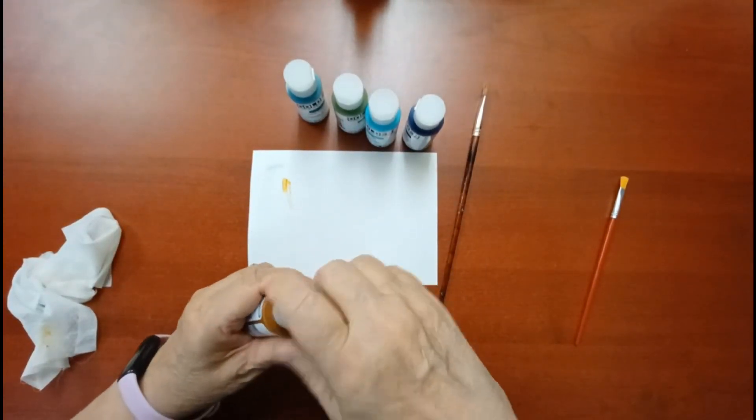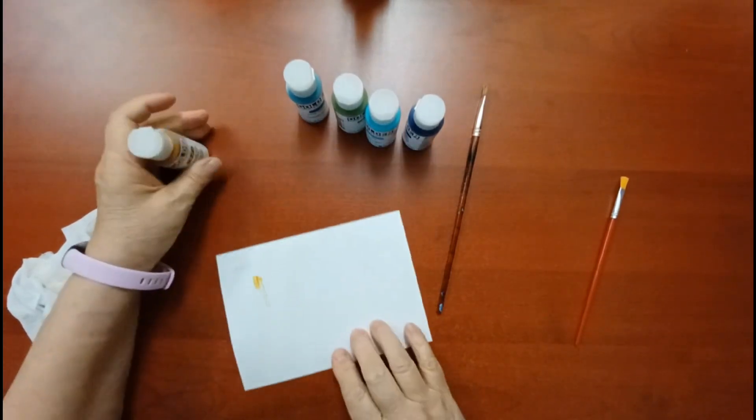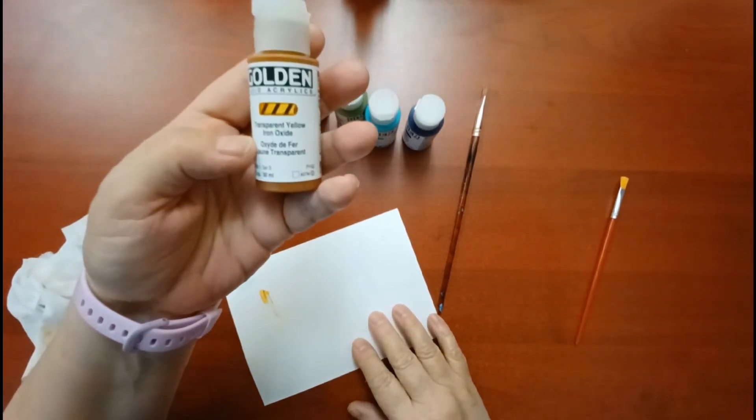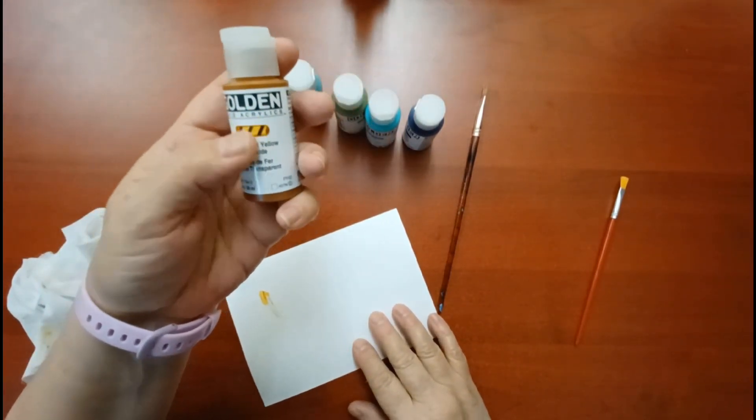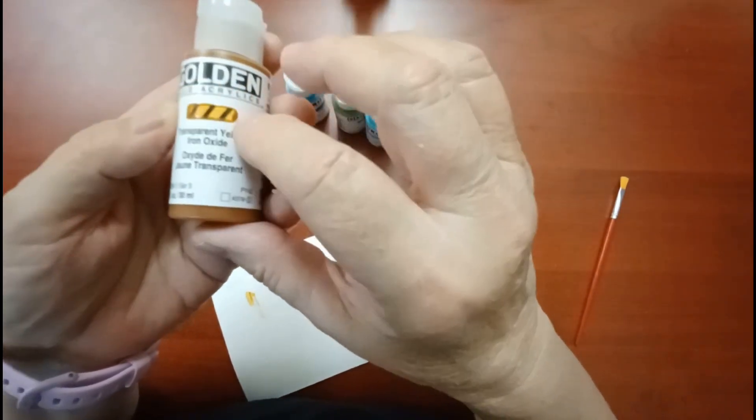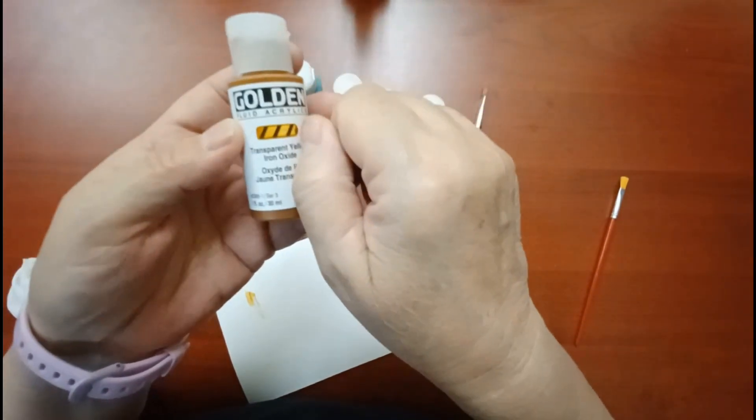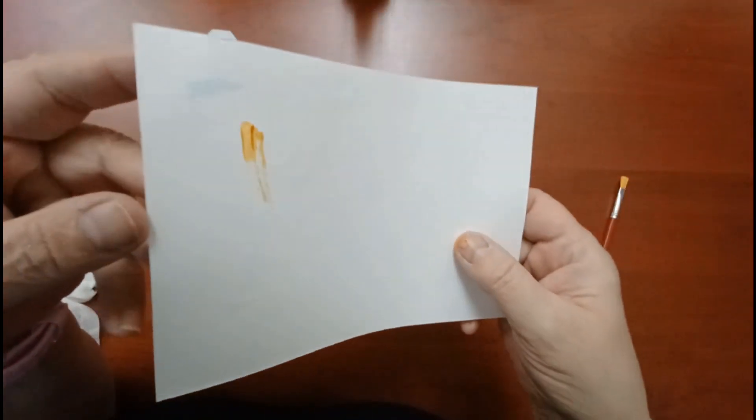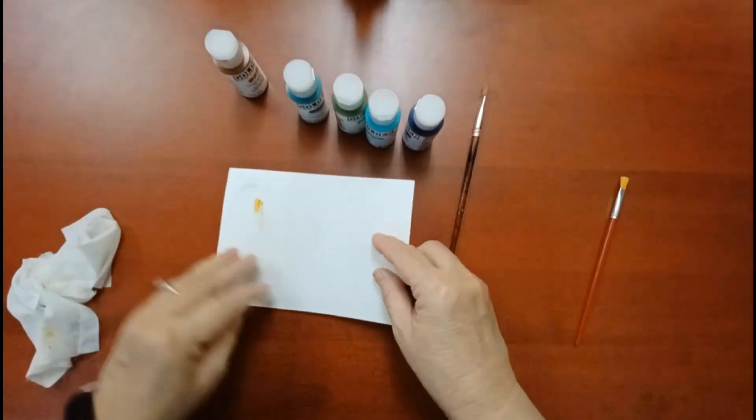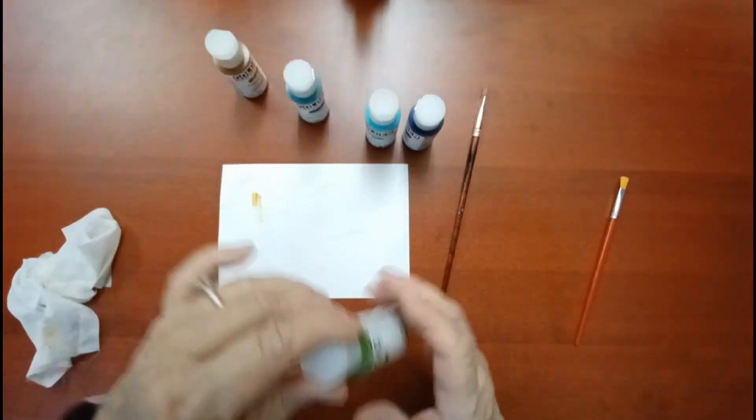I know that the camera is not going to do that any justice but it is a transparent yellow iron oxide. And then I noticed it's got a little swatch right there on the front, they just do a little swatch on them. That is so cool. But look at this, oh my gosh it's gorgeous. Okay so then the green gold.